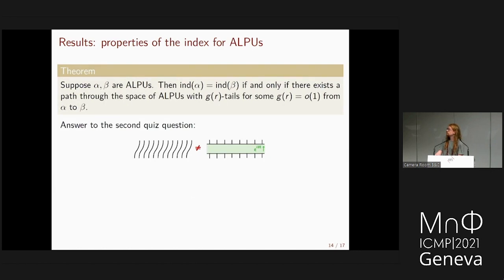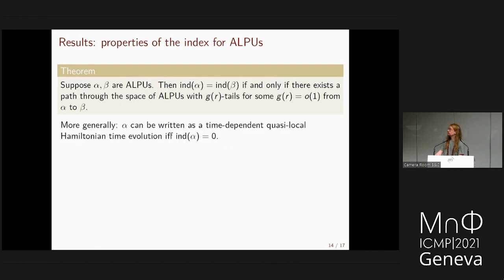Two ALPUs have the same index if and only if they can be connected by a path through the space of ALPUs with uniformly bounded tails. This answers the second quiz question: a translation cannot be written as Hamiltonian evolution under mild conditions. More generally, an ALPU can be written as a time-dependent quasi-local Hamiltonian evolution if and only if its index is zero — this is the converse to Lieb-Robinson bounds.